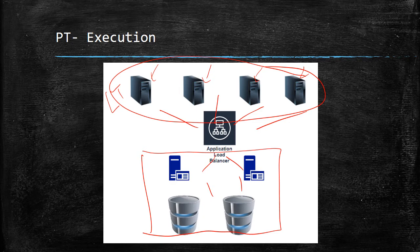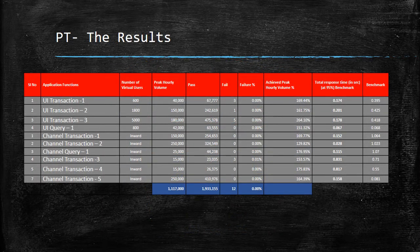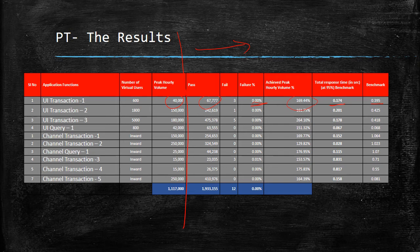Once execution is done, we look at the results. The left-hand side shows what was desired and the right-hand side shows what was actually achieved. For example, out of a target of 40,000, you actually pumped in 67,000, and failures were well below the threshold. You achieved 169% of peak volumes, which is good. However, for some transactions the response time exceeded the benchmark — those are the ones where you over-shot — and you must repeat tests for all transactions, not just the failed ones, until all results are within the defined benchmark range.